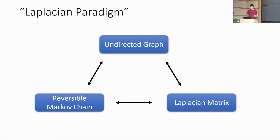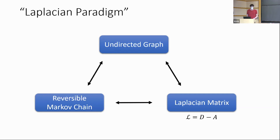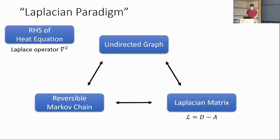The idea behind this is that you have an undirected graph, and you can view it just as a graph, or as a reversible Markov chain by looking at random walks on the graph, or as a matrix called a Laplacian matrix — defined as the diagonal matrix of degrees minus the adjacency matrix (or the transpose of the adjacency matrix in the directed case). And another interpretation: it's the right-hand side of the heat equation.